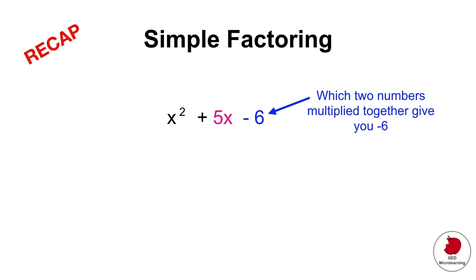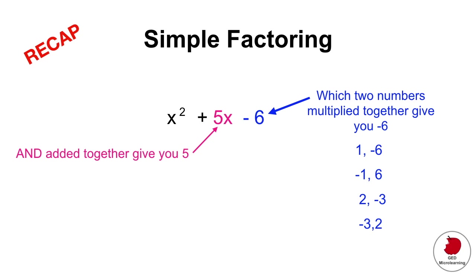Here's the technique: look at your constant — in this example it's minus 6 — and ask which two numbers multiplied together give you minus 6 and added together give you 5. So you factor out all pairs that multiply to minus 6: 1 times minus 6, minus 1 times 6, 2 times minus 3, or minus 3 times 2. That's step one.